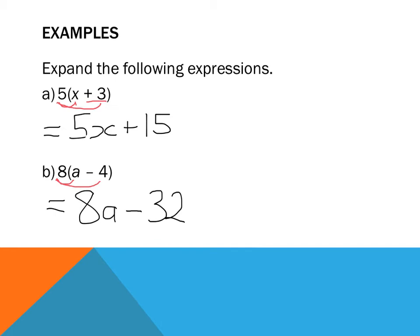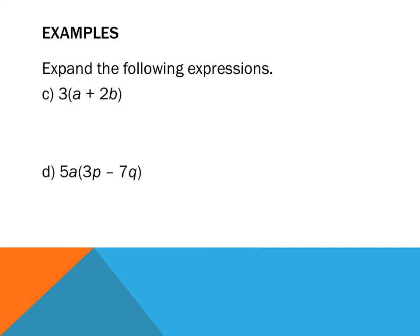Positive 8 multiplied by negative 4 — a positive multiplied by a negative — I always make sure I include the negative sign. 8 times 4 is 32, so it's negative 32. My answer becomes 8a minus 32. That's the equivalent expression — that's how I've expanded the brackets. I've got an 8a and a 32 and they're not like terms, so I can't group anything.